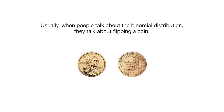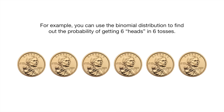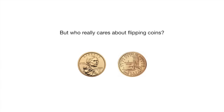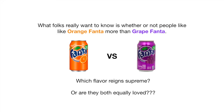Usually when people talk about the binomial distribution, they talk about flipping a coin. A coin usually has heads and at least one tail. For example, you can use the binomial distribution to find out the probability of getting six heads in six tosses. But who really cares about flipping coins? What folks really want to know is whether or not people like orange Fanta more than grape Fanta. Which flavor reigns supreme? Or are they both equally loved?